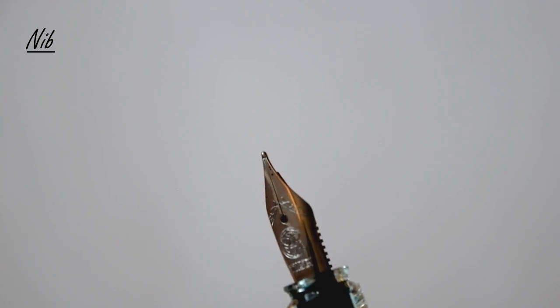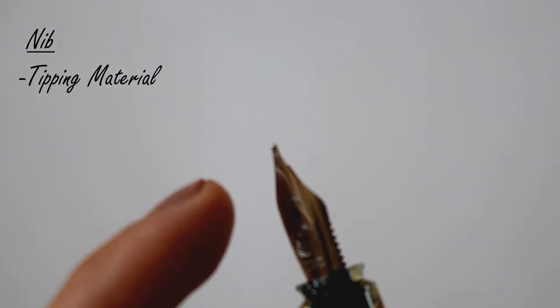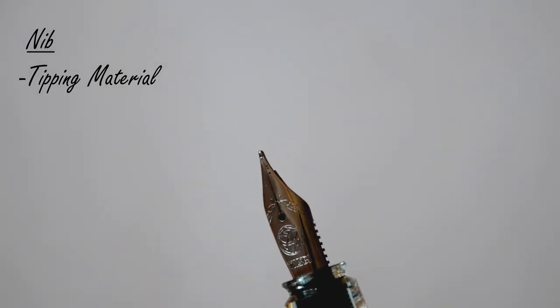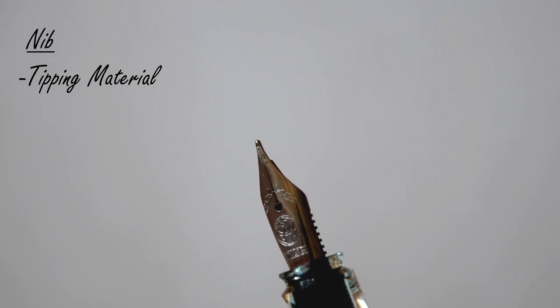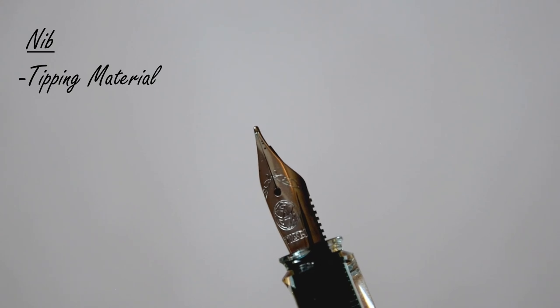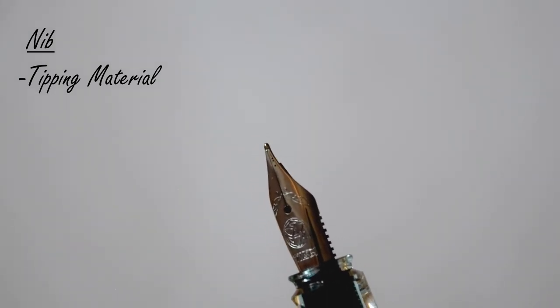The first part that we'll be focusing on on this nib is the tipping material, which is essentially the small dot right at the top here. This tipping material is usually a piece of wear-resistant and hard metal alloy that is welded onto the tip of the nib and that is usually ground to a specific nib size.